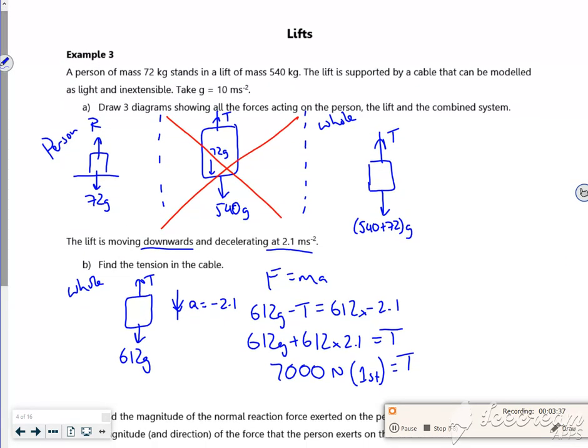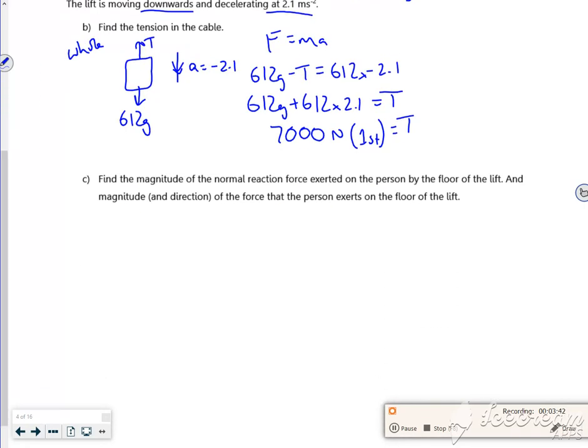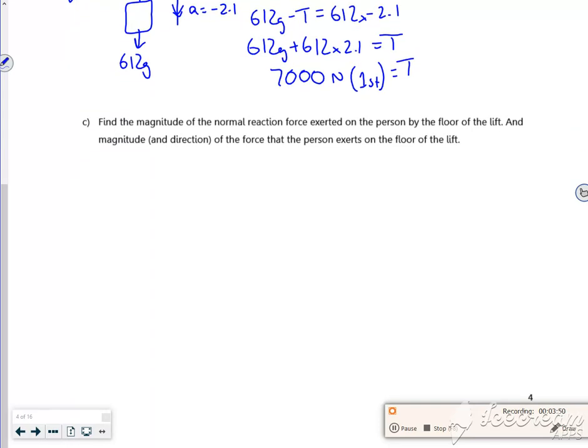Because it says take g as 10. Then it asks for the magnitude of the normal reaction force exerted by the person. So this is our person - this is the person in the lift.